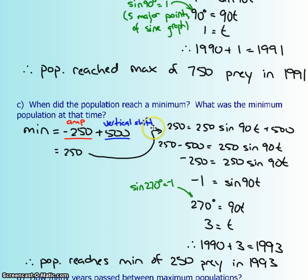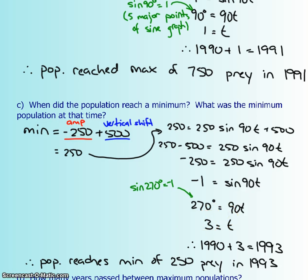Then we do the exact same thing. We're going to sub it into the equation and solve for t. So again, move the 500 over, it becomes negative. We subtract, it becomes negative 250 and then we divide 250 from each side and we get negative 1. So taking the inverse of sine of negative 1, we're going to think about the graph and at 270 degrees, that's when sine was negative 1. So I can get rid of this sine and this is going to become 270 because I took the inverse sine of negative 1. Then we divide both sides by 90 to get rid of that 90 and we get 3. So you're going to take your base year and then add an additional 3 years to it, which is 1993. In 1993, that means your population reaches a minimum of 250 prey.